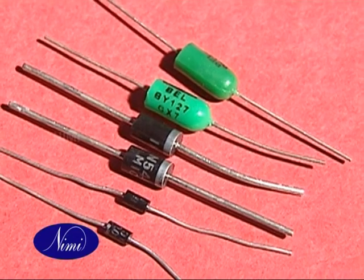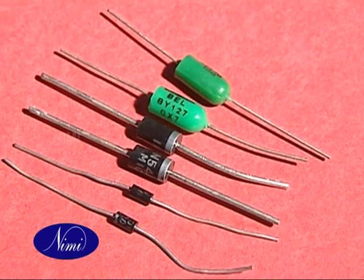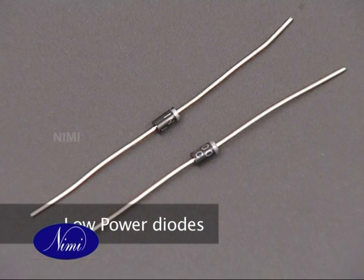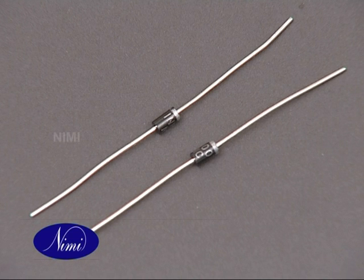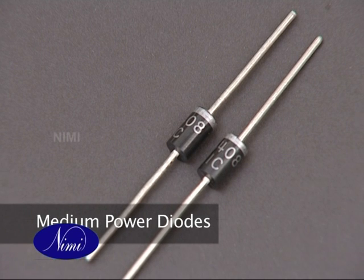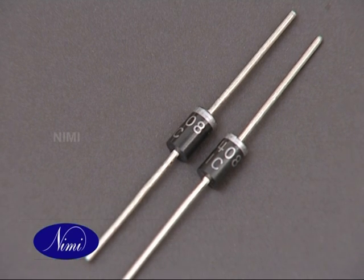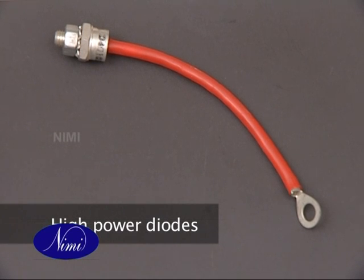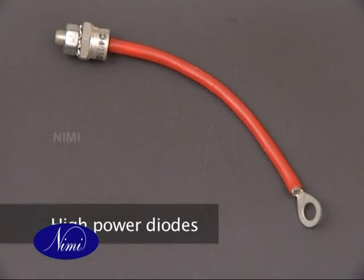Based on their current carrying capacity and power handling capacity, diodes can be classified as follows: low power diodes can handle power of the order of several milliwatts only, medium power diodes can handle power of the order of several watts only, and high power diodes can handle power of the order of several hundreds of watts.